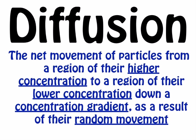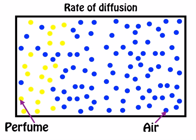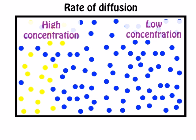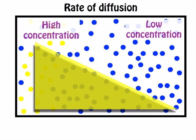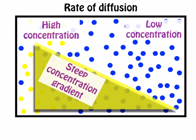Next we're going to think about what might determine the speed that things can diffuse at. Let's go back to our example of perfume or deodorant sprayed into the air in a room. Here on the left-hand side we've got the perfume represented in yellow as yellow particles, and all around the room we've got a lot of air represented here by the blue particles. We've got an area of high concentration and an area of low concentration. A good way to think about this gradient is to look at it like a triangle — on the left we've got lots of it, sloping down towards the right where we've got very little, or in this example none at all. Because we've got such a strong difference — lots on one side and none on the other — we've got a steep concentration gradient.